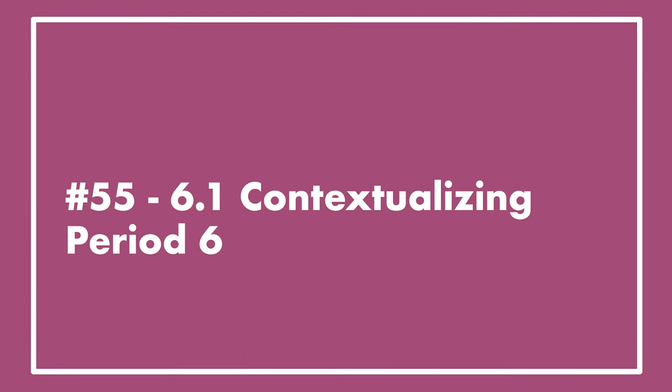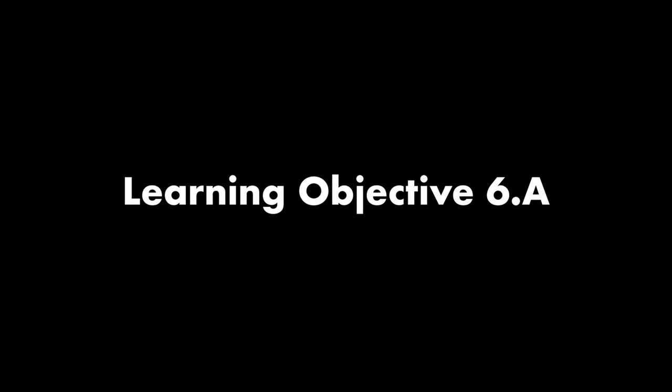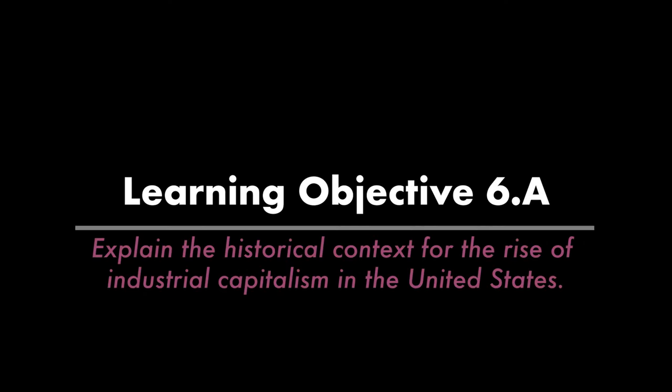Welcome back to lecture number 55. This is the start of a new historical period. Period 6 is going to take us from 1865 to 1898, and this first lecture is meant to provide context for everything that happened. The learning objective is to explain the historical context for the rise of industrial capitalism in the United States.